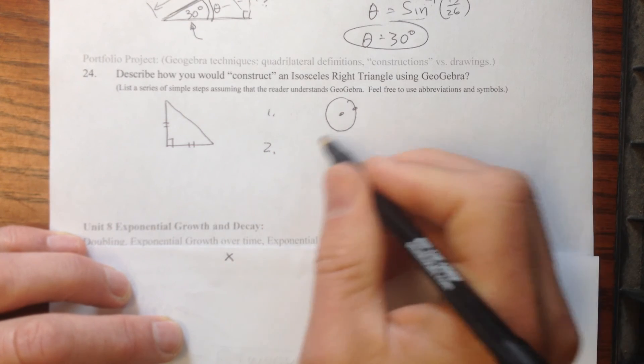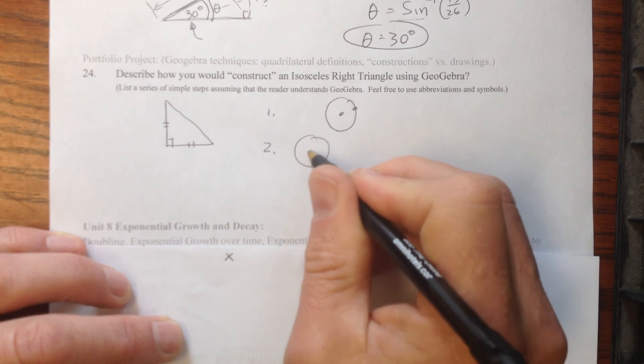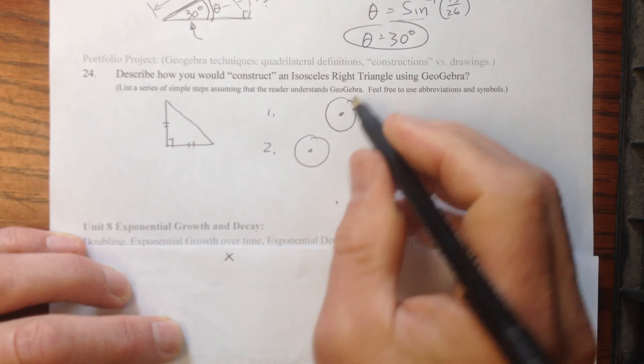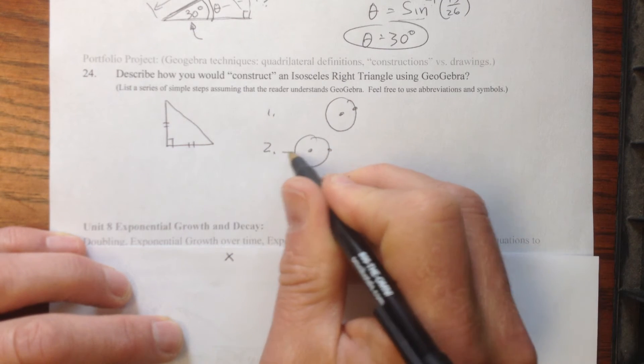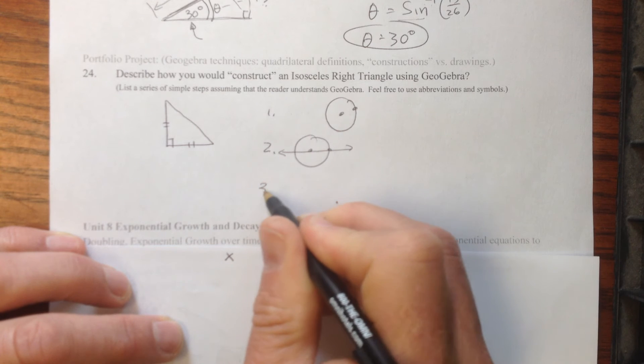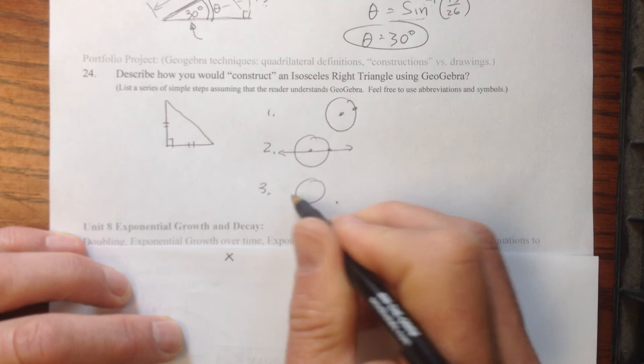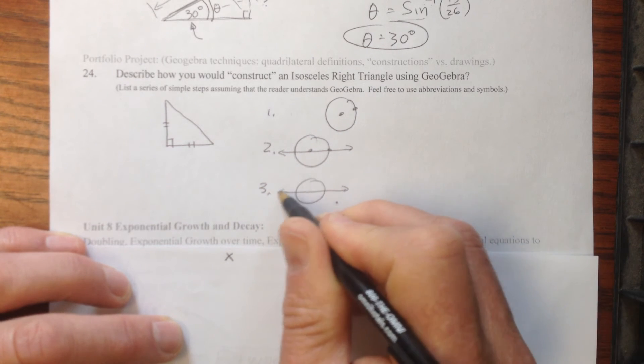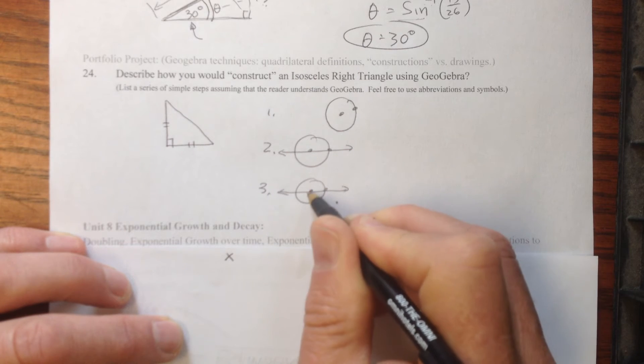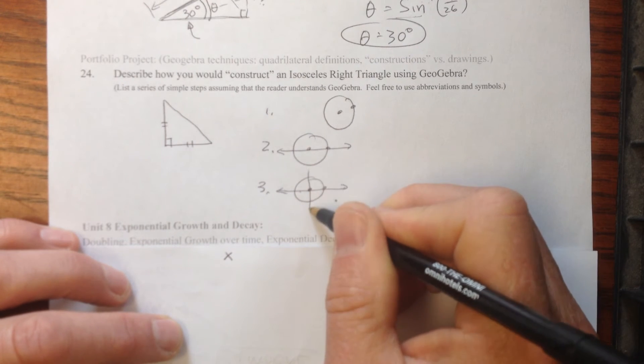So I'm not going to write this out because it will take too long to watch me do this on camera, but then I would connect those like this, actually then I would connect those into a line, so like that would be step two. Step three then is construct a perpendicular, so I've got this and I can click on this point and this line and I can do a perpendicular like that.